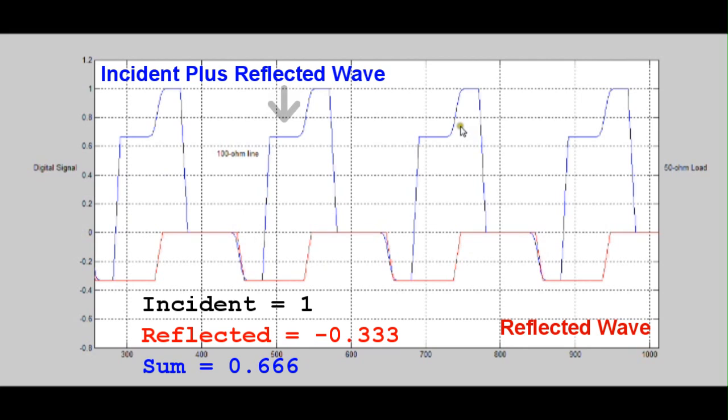And wherever we have this one volt peak, and it intersects with this minus a third of a volt, it's going to pull this down. So we're going to get this weird rippling effect, and that's just due to the transmitted wave summing with the reflected wave.